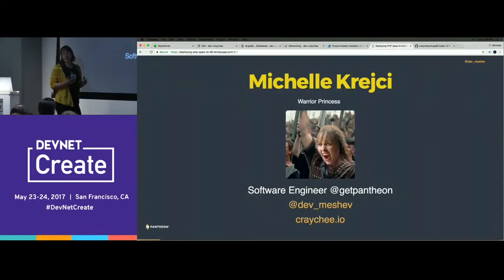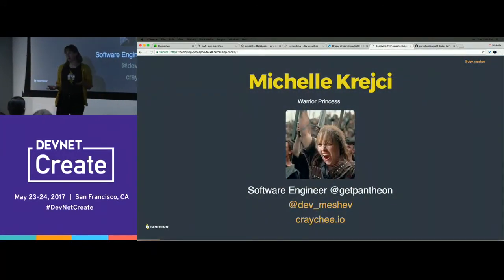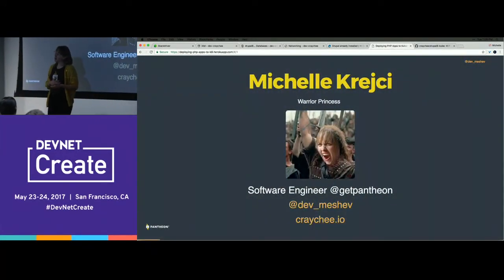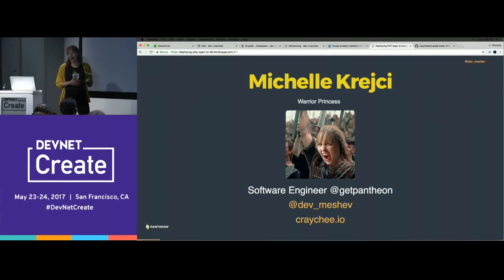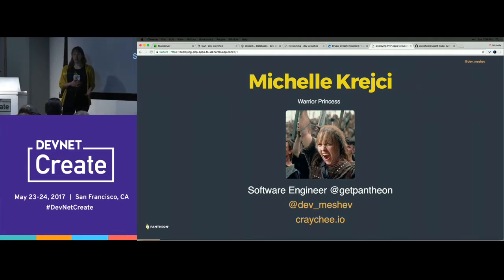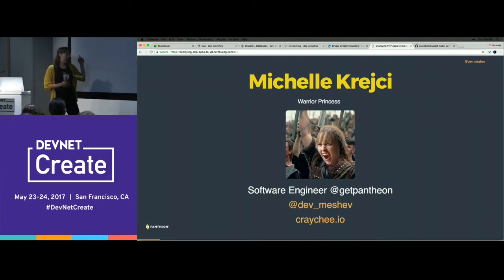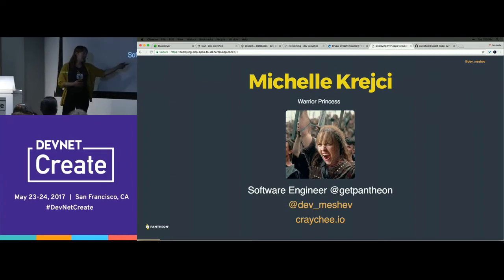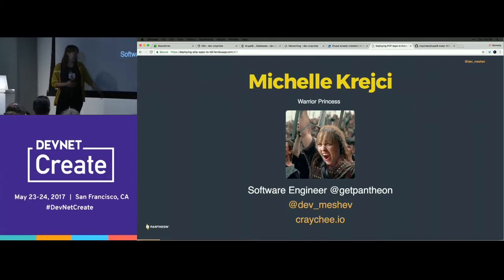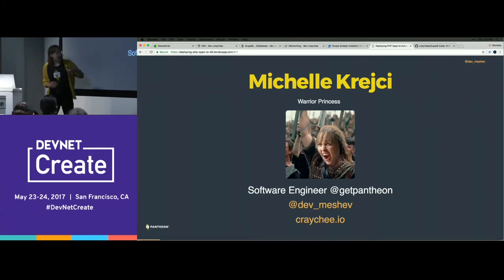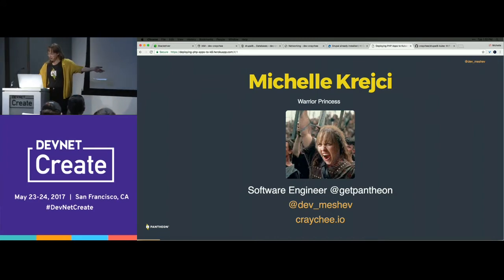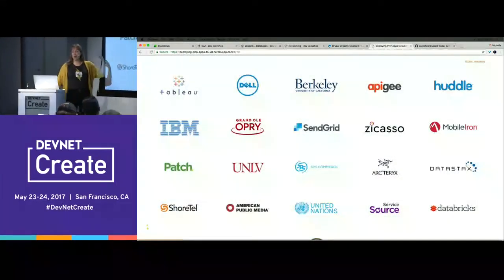My name is Michelle Krejci, I'm a warrior princess, but I'm also a software engineer. I work at a company called Pantheon Systems, more on that in a second. I get really excited when anyone follows me on Twitter — it does something for my ego. I'm really happy to be here today.